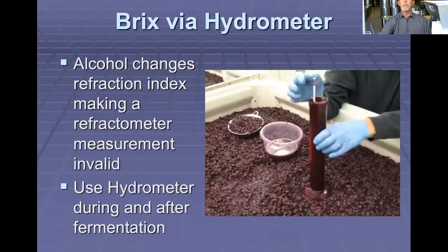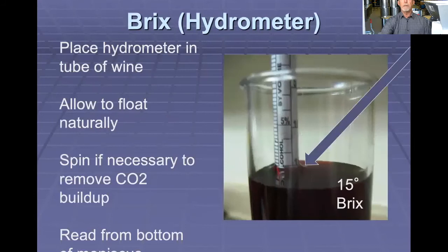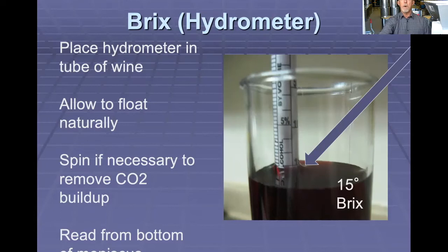You can also measure BRIX with a hydrometer. In the must, this is very important because alcohol can change the refraction index, making measurement by a refractometer inaccurate. So we use hydrometers during the fermentation process. Place a hydrometer in a graduated cylinder and allow it to float naturally. You may spin it if necessary to remove any CO2 buildup, since CO2 accumulates during fermentation and would make it float a little higher than normal. Read at the meniscus — at the bottom of that meniscus — to determine the amount of BRIX still present.